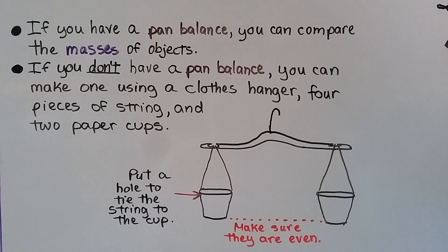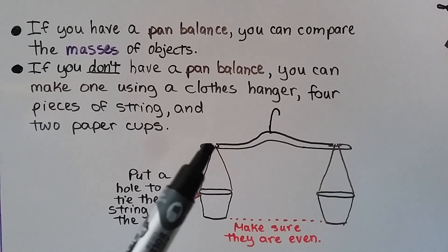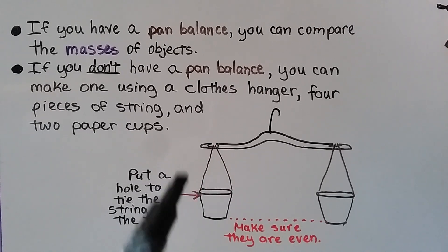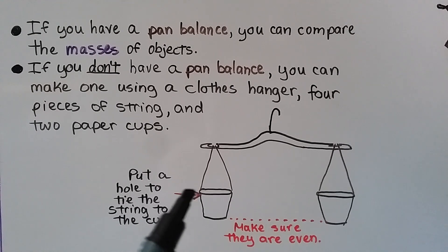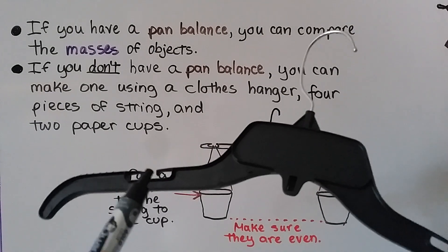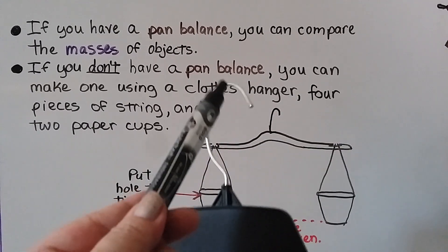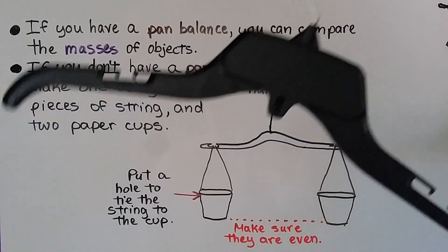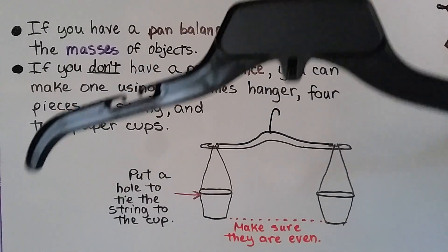If you have a pan balance, you can compare the masses of objects. If you don't have a pan balance, you can make one using a clothes hanger, four pieces of string, and two paper cups or paper bowls. You put the string through the parts of the hanger meant to hold straps, tie it to the cup or bowl, and make sure they're even. If one side has more mass than the other, it will go down on that side.